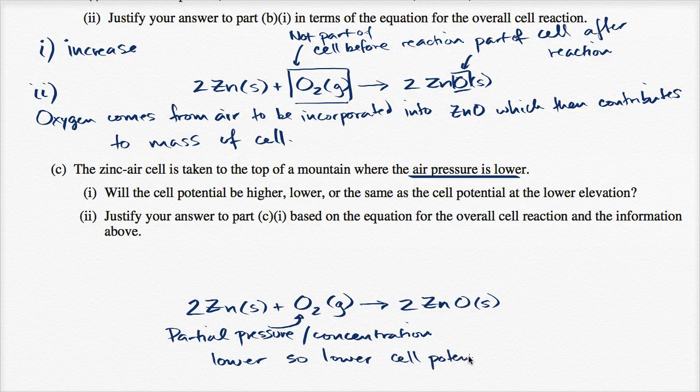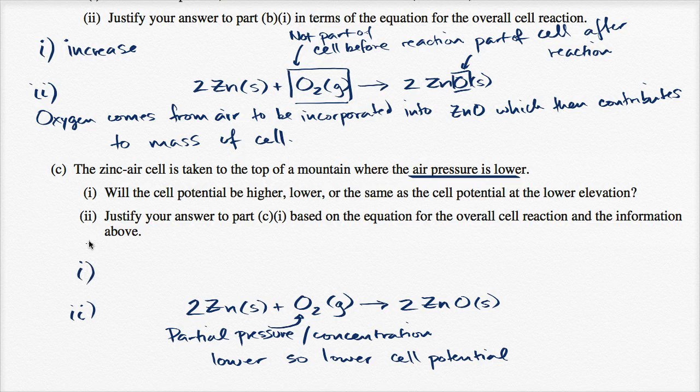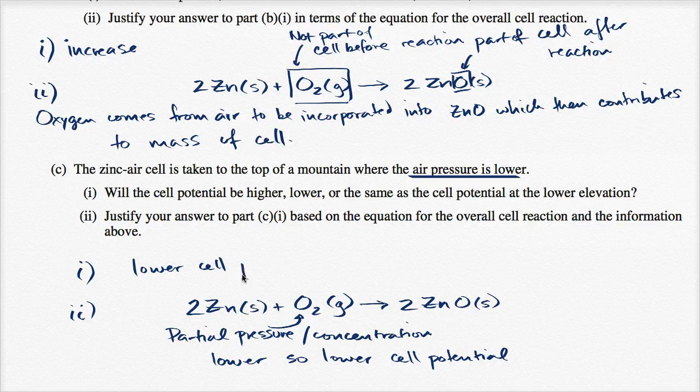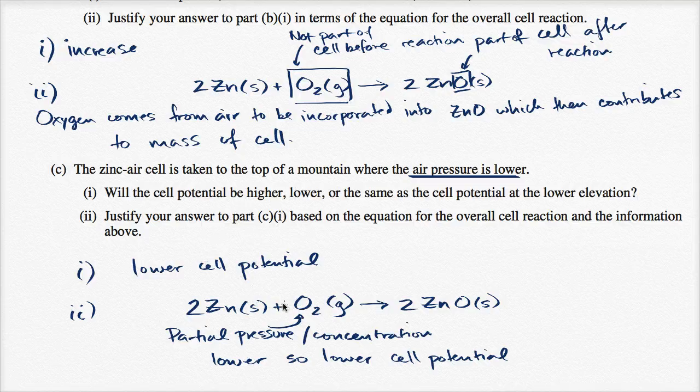So lower cell potential. So actually I just did it in reverse. I answered part two first. And so part one is lower. So we're going to have a lower cell potential. And it's really important to get the conceptual understanding of why it's happening.